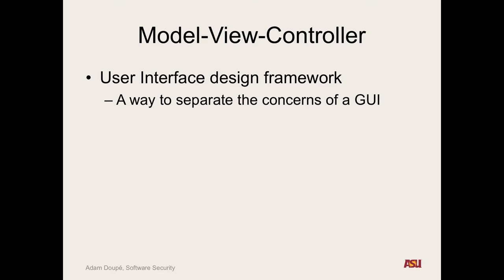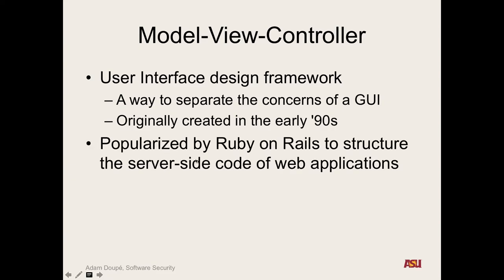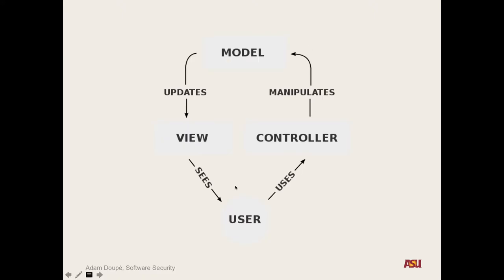We have a model — the data and state of our system. That's separate from how we display it in a GUI — the view, which is just how it looks. And the controller is the thing in the middle: you click a button, that means update this thing in the model, and here's your new view. The business logic is in the controller, the model stores state, and the view handles how everything looks.